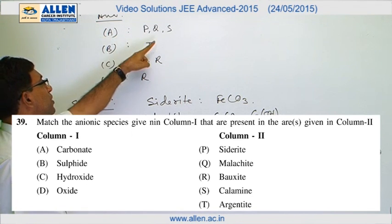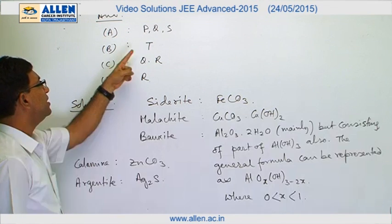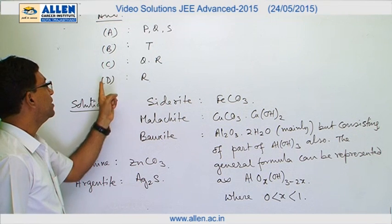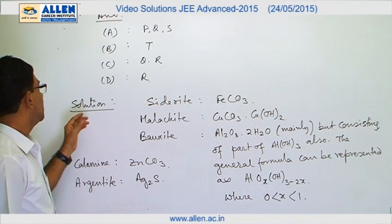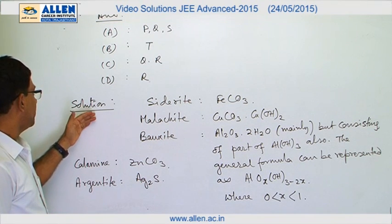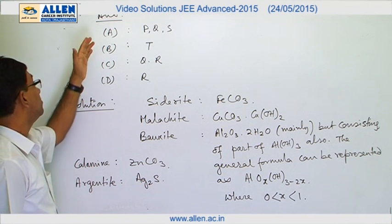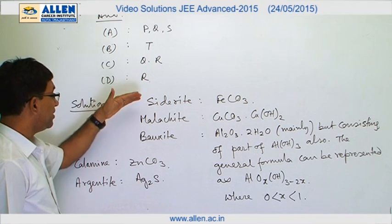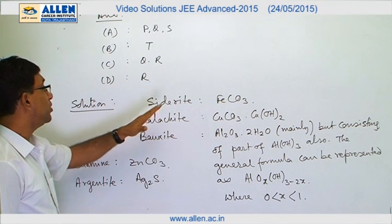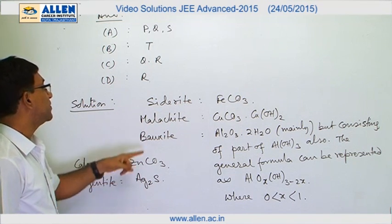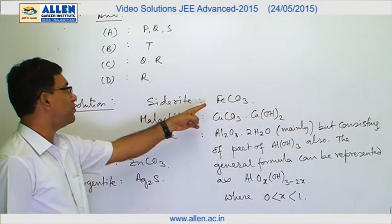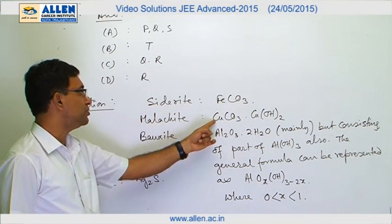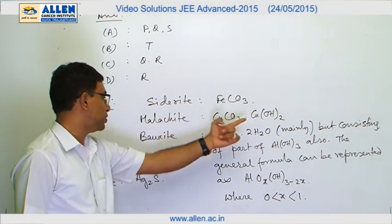Question number 39, answer is: A→P,Q,S; B→T; C→Q,R; D→R. The above answers are justified by the formulas of the given ores. Siderite is FeCO₃, malachite is CuCO₃·Cu(OH)₂.